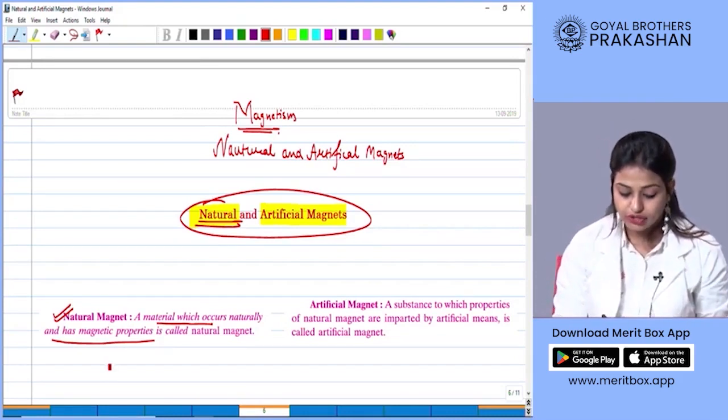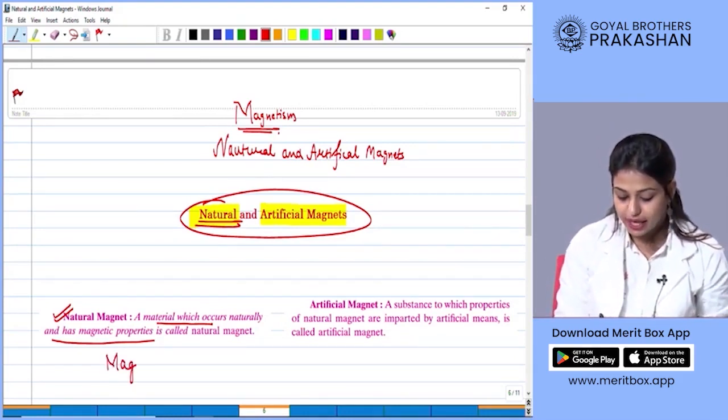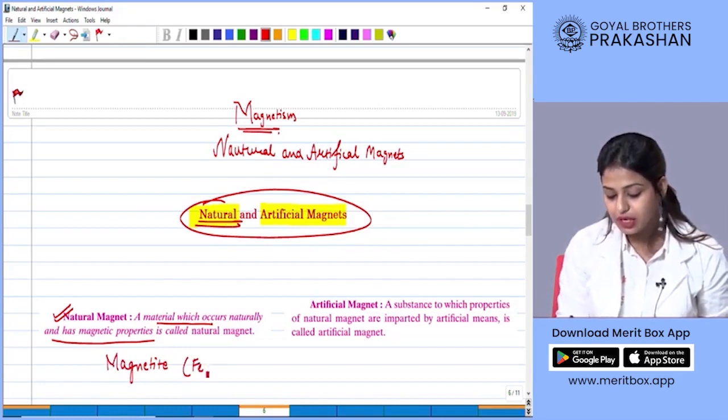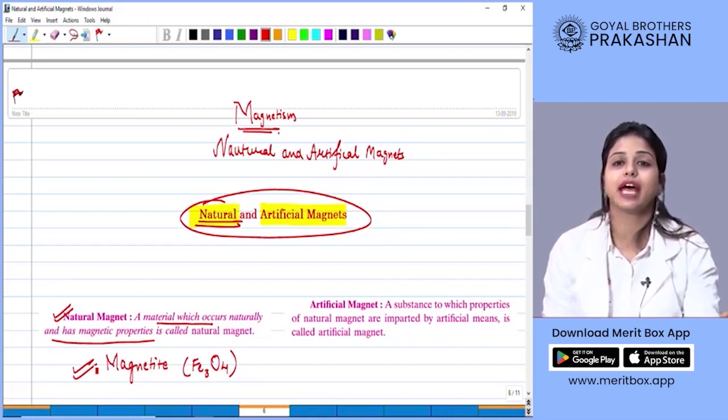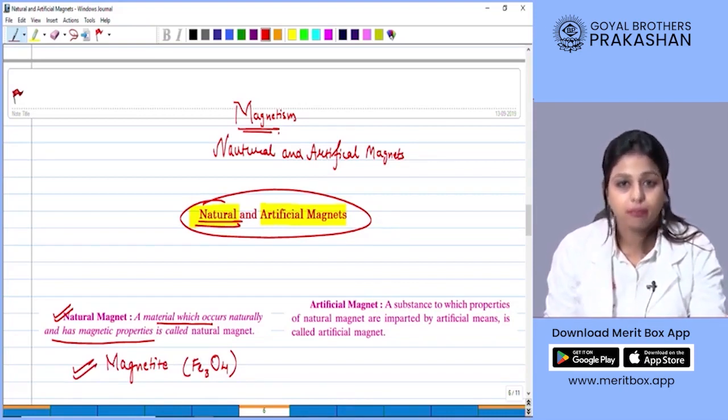The example of natural magnet would be magnetite. The formula for magnetite is Fe3O4. This is a natural magnet that was discovered by Magnus.